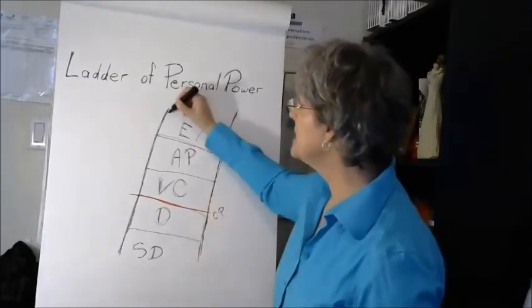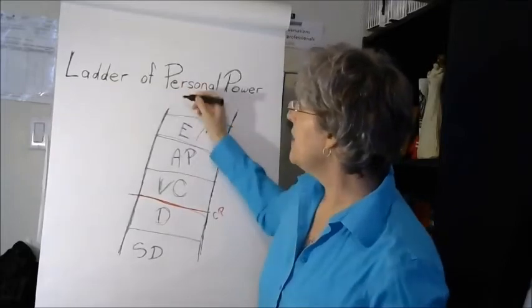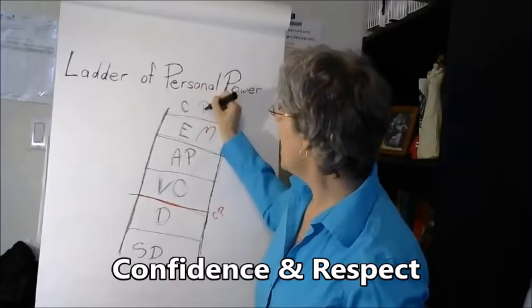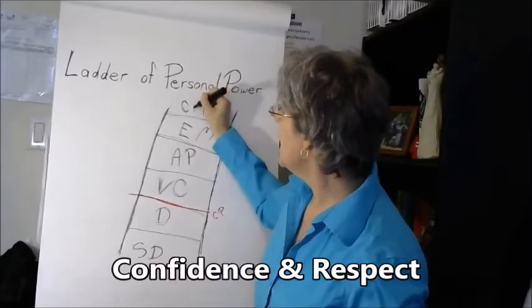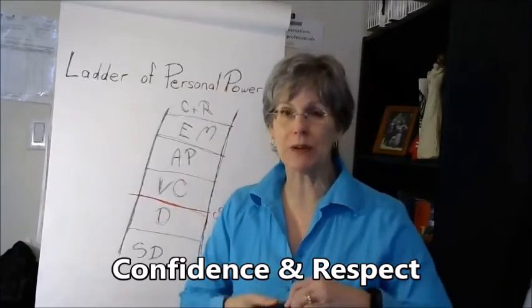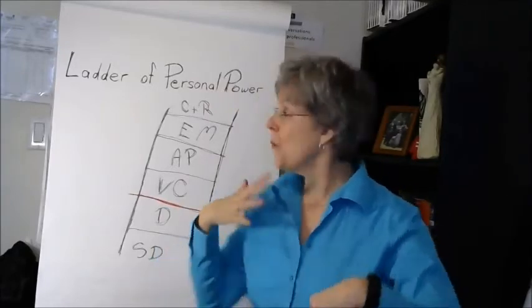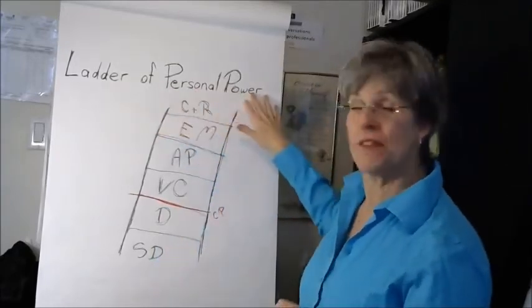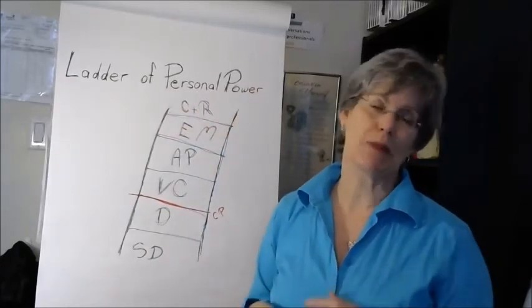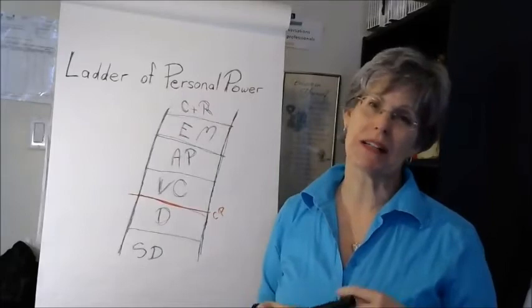And when that happens, we really reach the top rung of the ladder, and that is when we endure confidence and we have a lot of respect that we both give and receive to the people around us. Because when we are at the top of the ladder of personal power, people look to us as people of influence, they look to us as models, as role models. And so we know we're at the top.